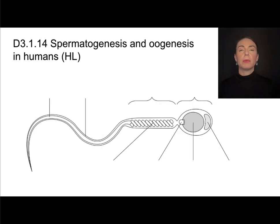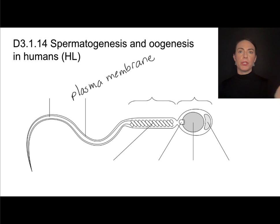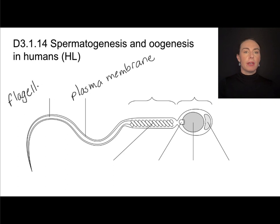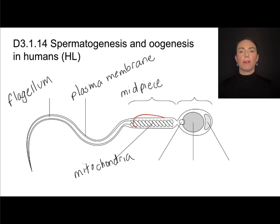Here's a mature sperm with some features to discuss. Going all the way around the outside is the plasma membrane — this is important for when the sperm wants to fuse with the egg. There is the flagellum, which some people refer to as the tail. In the middle of the sperm is an area called the mid piece, and inside the mid piece are several mitochondria. Since the sperm has a lot of swimming to do to get all the way up to that egg in the oviduct, it's going to need to generate lots of ATP.